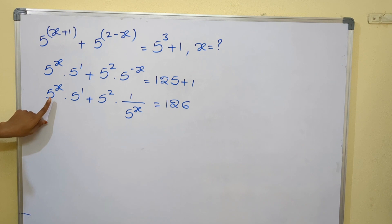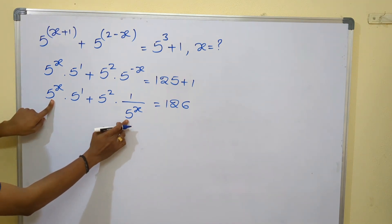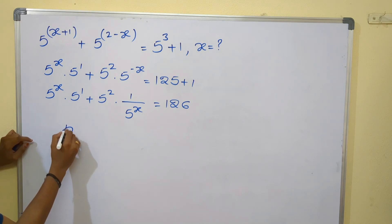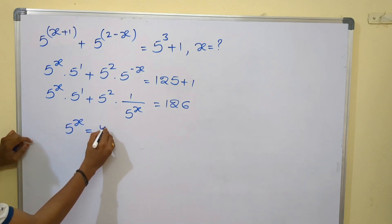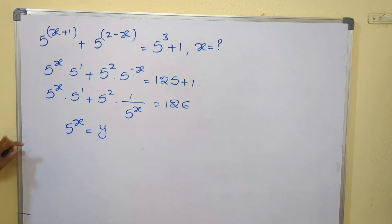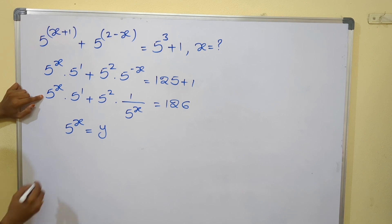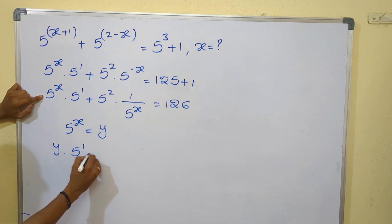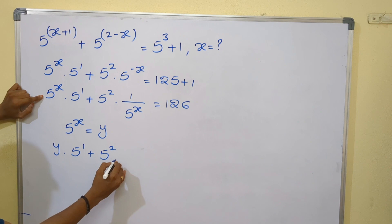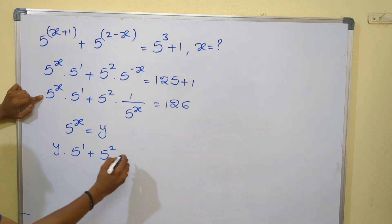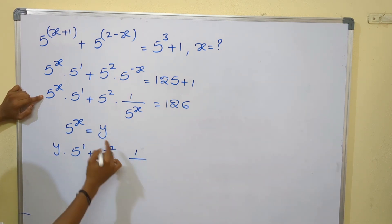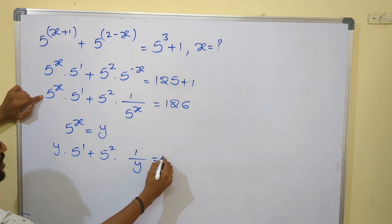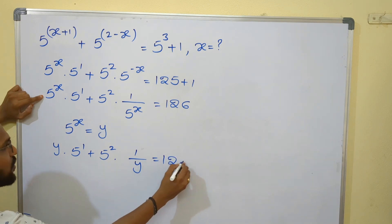Now, in the first term I have 5^x, and in the second term also I have 5^x in the denominator. So I will let 5^x equal some constant y. Replacing 5^x with y: y · 5^1 + 5^2 · (1/y) = 126.